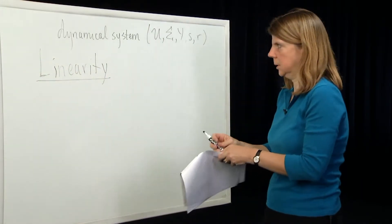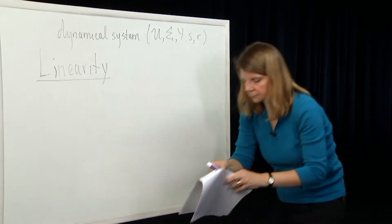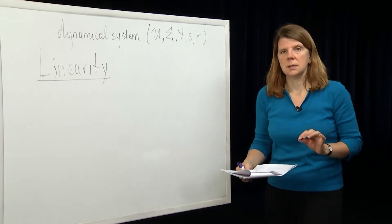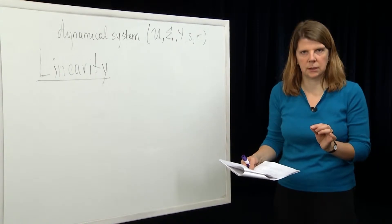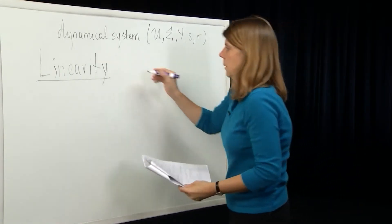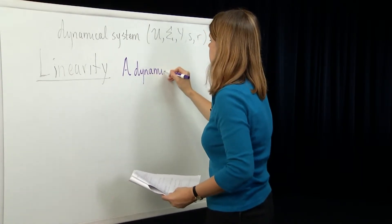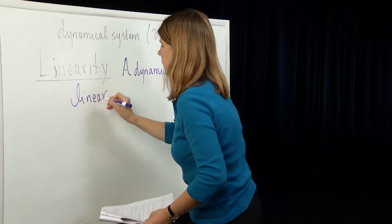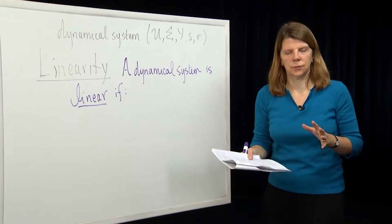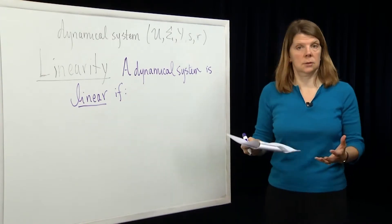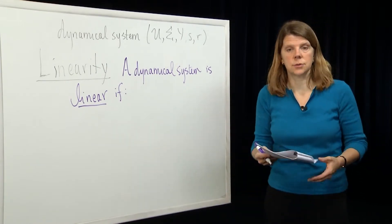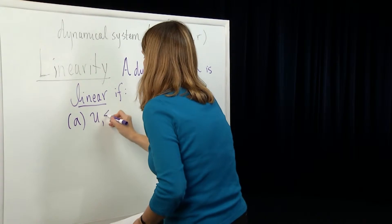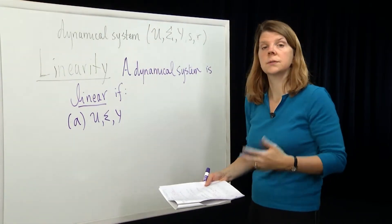A dynamical system is said to be linear if its response function is linear with respect to two of the arguments: with respect to the initial state and with respect to the input function. In order to talk about linearity of functions over spaces, we first have to make sure that the underlying spaces have a vector space structure. So the first condition is that the input space, the state space, and the output space all have to be vector spaces over the same field F.